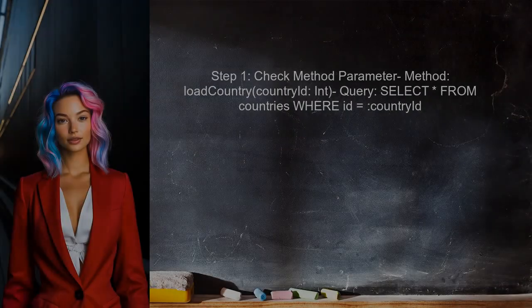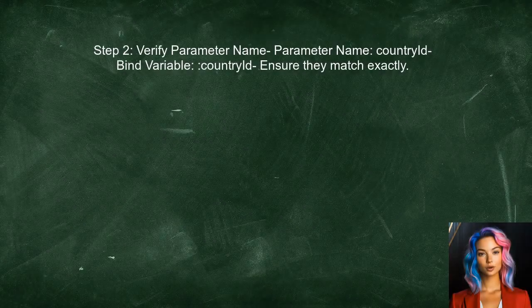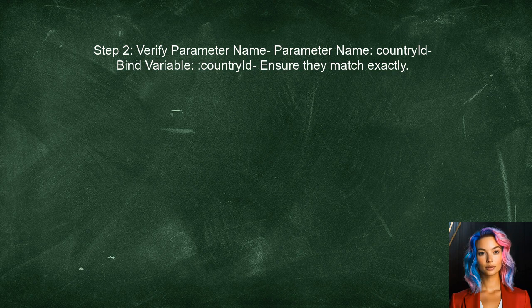To address the user's issue, we first need to ensure that the method parameter in the DAO interface matches the bind variable in the query. The user has a method named loadCountry that takes countryID as a parameter. The user should verify that the parameter name in the method signature is exactly the same as the bind variable in the query — in this case, the parameter is named countryID, which is correct.